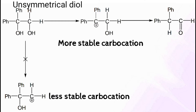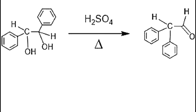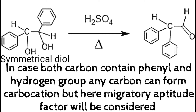To understand this, consider a Pinacol rearrangement with an unsymmetrical diol: one carbon has two phenyls and one carbon has two hydrogens. The carbocation will be formed at the carbon bearing two phenyls. Why? Because it creates resonance — a more stable carbocation. Two hydrogens give a less stable carbocation because there is no resonance. So in this reaction, the OH group is lost from the carbon bearing two phenyl groups, as it provides the more stable carbocation.